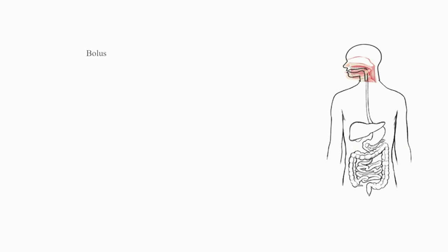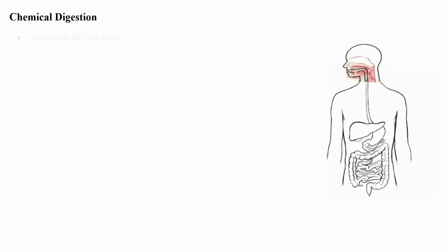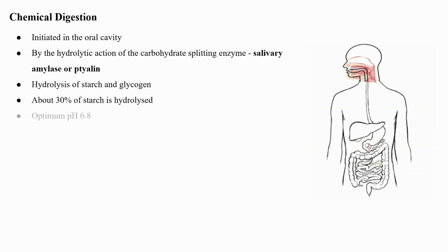The gastroesophageal sphincter controls the passage of food into the stomach. The bolus is conveyed into the pharynx and then into the esophagus by swallowing or deglutition, and further passes down through the esophagus by peristalsis into the stomach. Chemical digestion is initiated in the oral cavity by the hydrolytic action of the carbohydrate-splitting enzyme, salivary amylase.